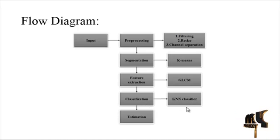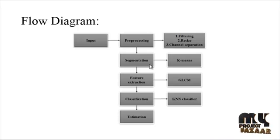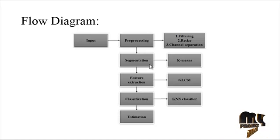In the classification step, the k-NN classifier is used. In the filtering step, noise is removed by applying a Gaussian filter to the input image. In the resize step, the image is resized to 256x256 pixels. In channel separation, the pre-processing step separates the image into three RGB channels: red, green, and blue.